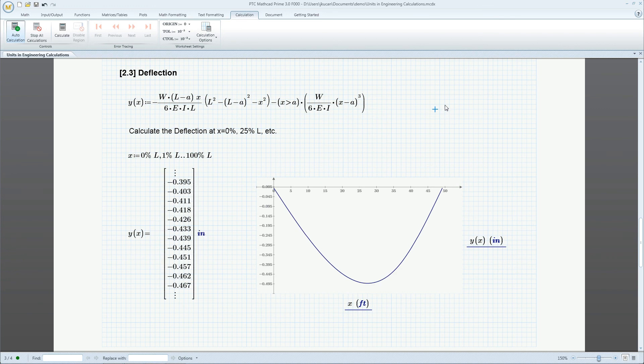Engineers often deal with unit conversion inconsistency. With PTC Mathcad Units Intelligence, we can automatically define and evaluate in units of our choosing. Conversion is done automatically, and consistency is checked to prevent errors.